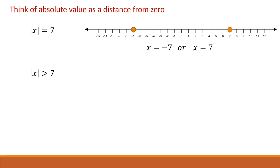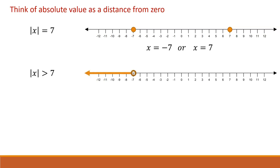We can extend the idea of absolute value being a distance from 0 when we have an absolute value inequality. For the absolute value of x is greater than 7, we're asking what numbers are a distance more than 7 units from 0 on the number line. Those numbers would either be to the left of negative 7 or to the right of positive 7, so the solution is x is less than negative 7 or x is greater than positive 7.